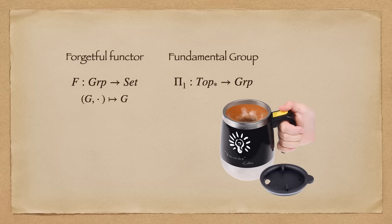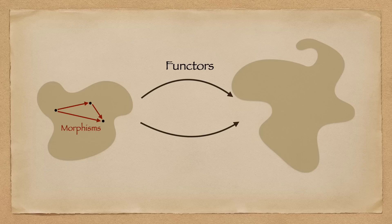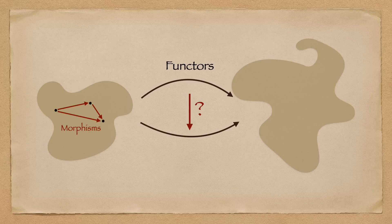Fundamentally, functors are maps between categories that preserve categorical structure. Now we have arrows between objects called morphisms, arrows between categories called functors. As good category theorists, now we of course ask again, can we generalize?